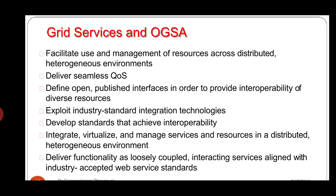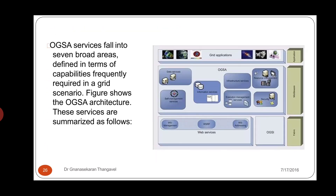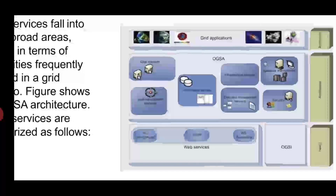Now we look at Open Grid Service Architecture services — what services are provided to the grid. OGSA services fall into seven broad areas in terms of capabilities frequently required in a grid scenario. The figure shows the OGSA architecture, and these services are summarized as follows.